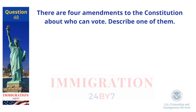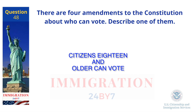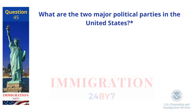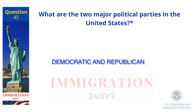There are four amendments to the constitution about who can vote. Describe one of them. Citizens 18 and older can vote. What are the two major political parties in the United States? Democratic and Republican.